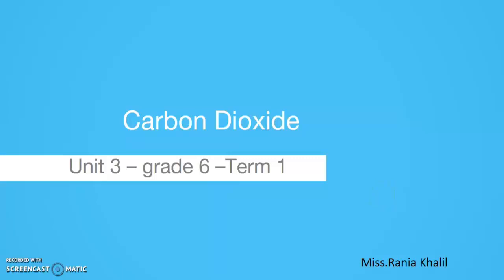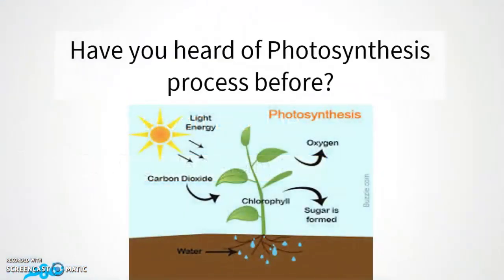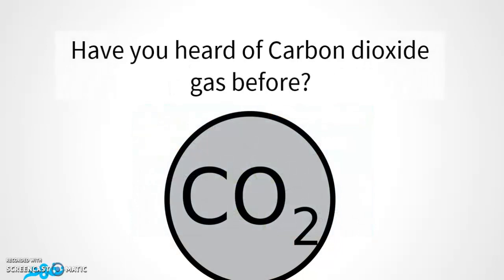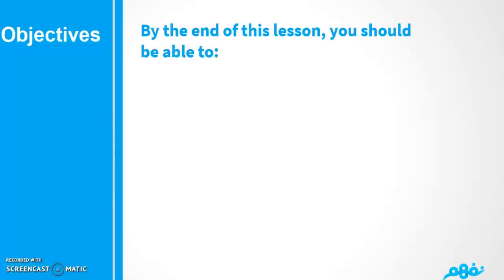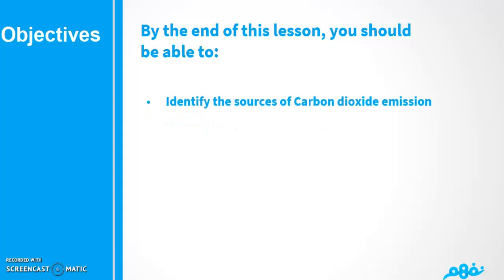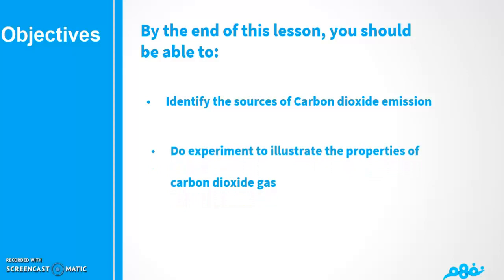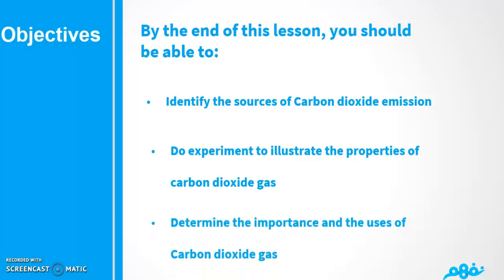Hello and welcome, dear students. Today we're going to work on Unit 3, Lesson 2, which is carbon dioxide. This lesson is designed for Grade 6. By the end of this lesson you should be able to: identify the sources of carbon dioxide emission, do experiments to illustrate the properties of carbon dioxide gas, and determine the importance and usage of carbon dioxide gas.